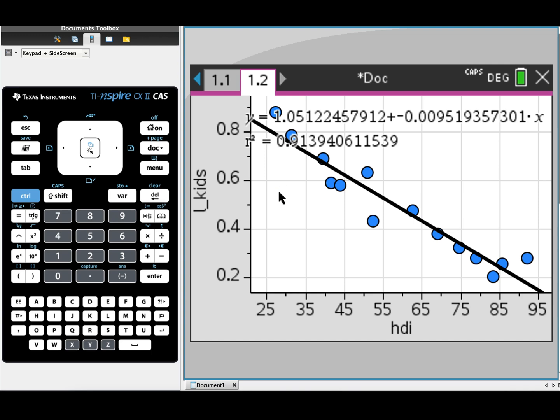And that's it. That's how we transform our data, put it on our scatter plot, and get the least squares regression line.